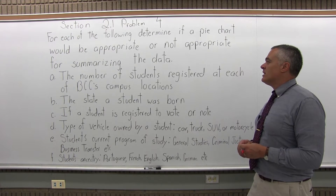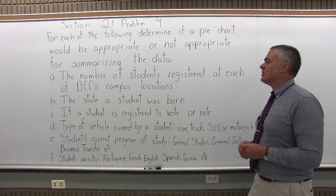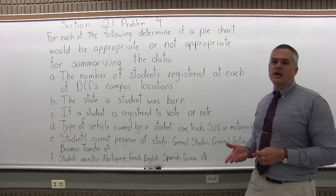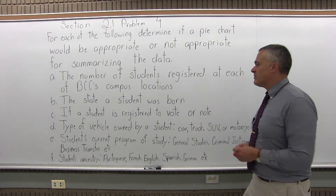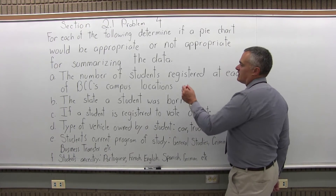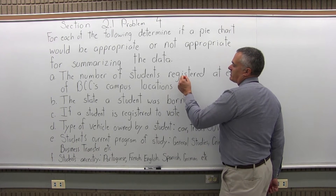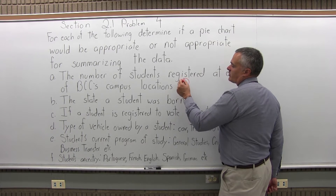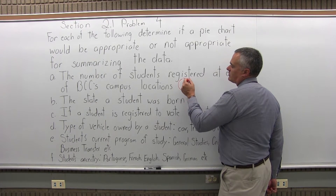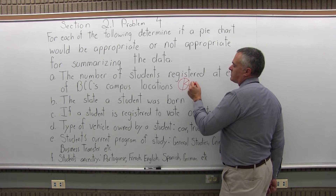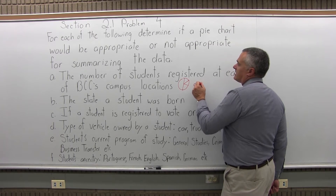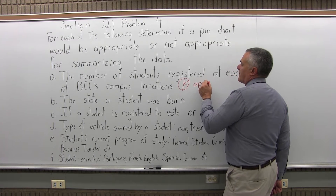Part A: the number of students registered at each of BCC's campus locations. That would be okay — I think I've even seen a pie chart for this. You could certainly have a pie chart: a lot of it would be the Fall River Campus, and then Taunton and New Bedford would split it up somewhat. So I would say that that's appropriate.